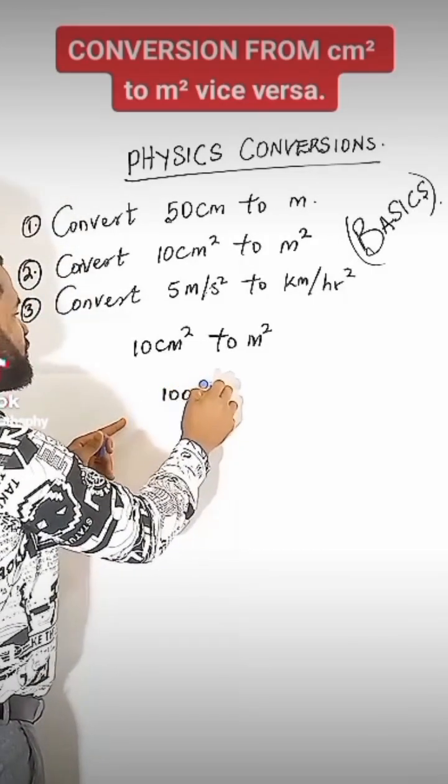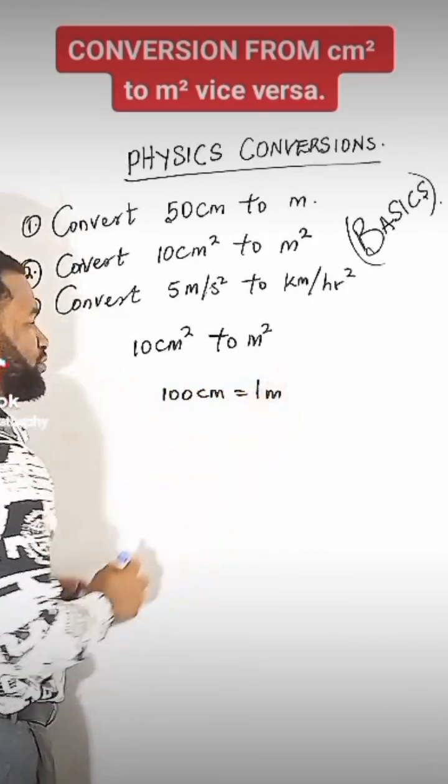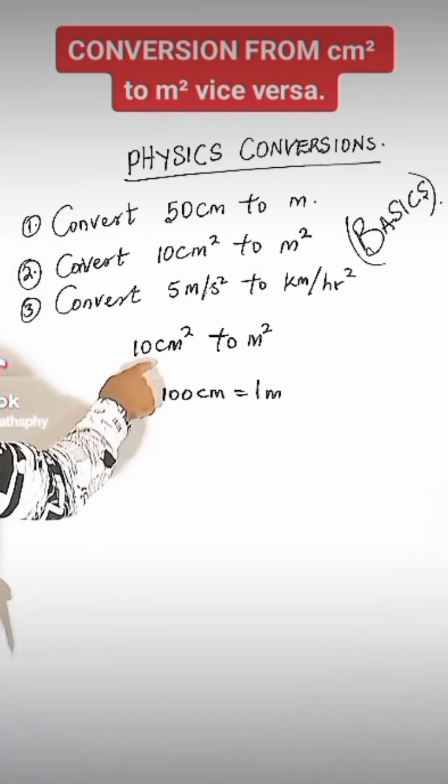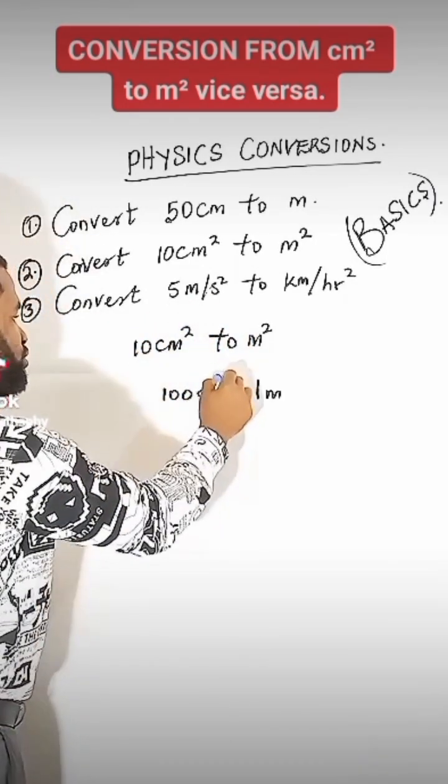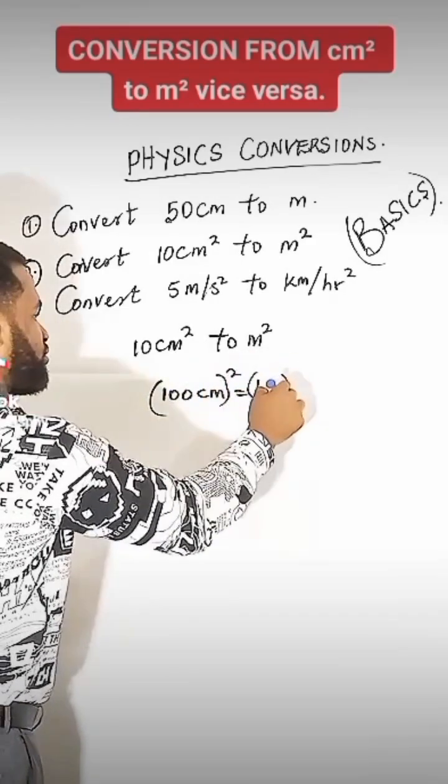First, 100 cm is 1 meter, all right? But then, remember this one is having squared. They are all having squared. All you need to do is square this and also square this.